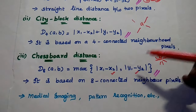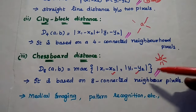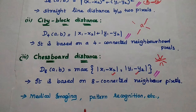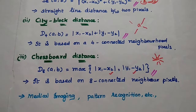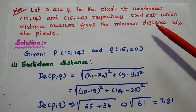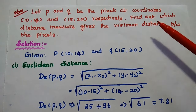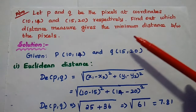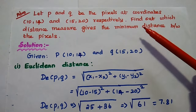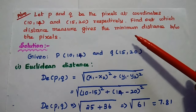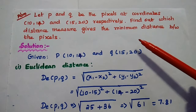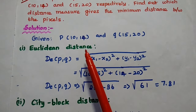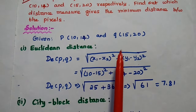While solving a problem you can easily understand these three formulas. This distance measure is widely used in medical imaging, pattern recognition, and image processing. Let's solve one problem so you can easily understand the concept of distance measures. Let P and Q be pixels at coordinates (10, 14) and (15, 20) respectively. Find out which distance measure gives the minimum distance between the pixels.